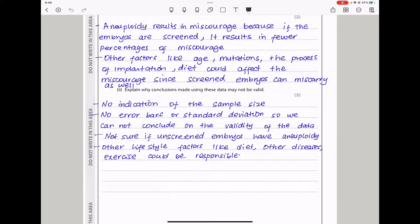The next question says, explain why conclusions made using this data may not be valid. From the table, they did not give us any indication of the sample size that was used in the experiment. They did not provide error bars or standard deviations. So we cannot conclude if the experiments were repeated and so the validity of the data cannot be established. And because we were not sure if the unscreened embryos had aneuploidy, we cannot be able to conclude on that as well. Also there are lifestyle factors like diet, other diseases, exercise, smoking, and so on that could be responsible for causing miscarriages.